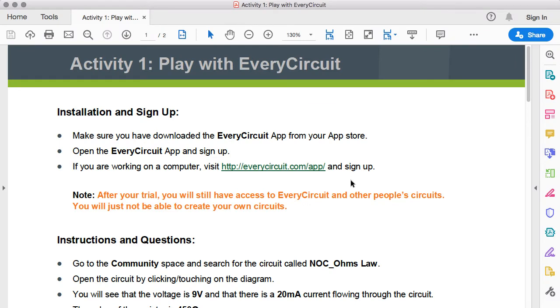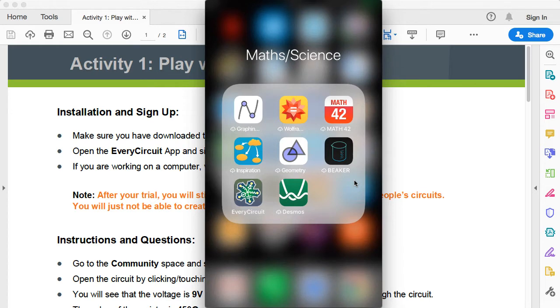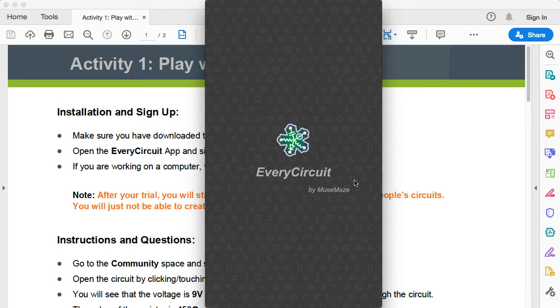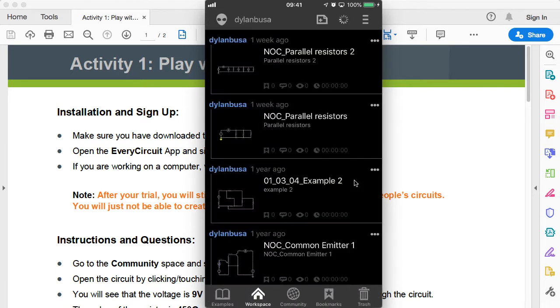This is activity number one where we get to play with EveryCircuit. So on a mobile device, once you've downloaded the application to your device you simply need to touch on the application icon and it will by default open the application up in your personal workspace. This is the workspace where you can collect a number of circuits that you yourself have created.